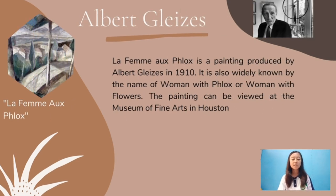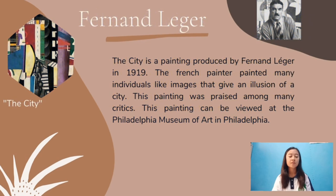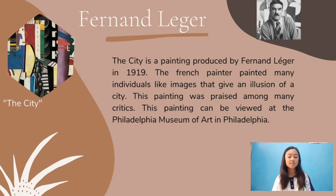Albert Gleizes was a French painter and writer known for his Cubist paintings and his lifelong commitment to promoting the Cubist movement. His 1910 oil painting 'La Femme aux Phlox,' often known as 'Woman with Flowers,' stands as a revolutionary moment in Gleizes' art — depicting a seated woman reading, flanked by two vases of flowers. Fernand Léger is considered one of the forefathers of pop art, but first became known for his unique variation of Cubism, dubbed 'Tubism' for its use of cylindrical forms. 'The City,' a 1919 painting by Léger, successfully captured the disjointed rhythms of contemporary urban space, with its skyscrapers, bridges, and scaffolding.